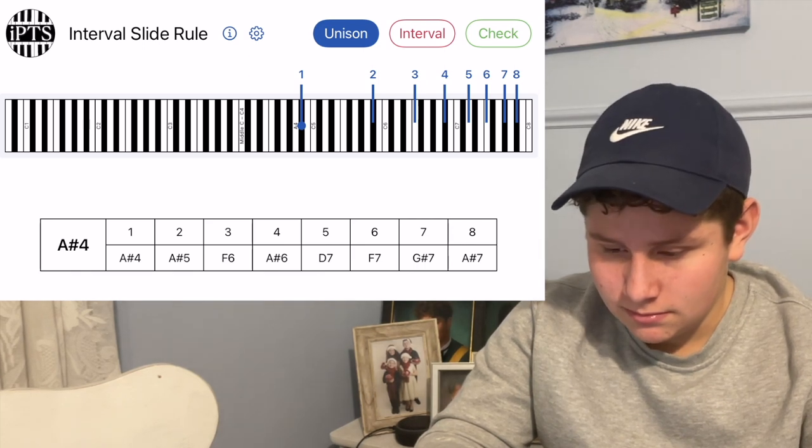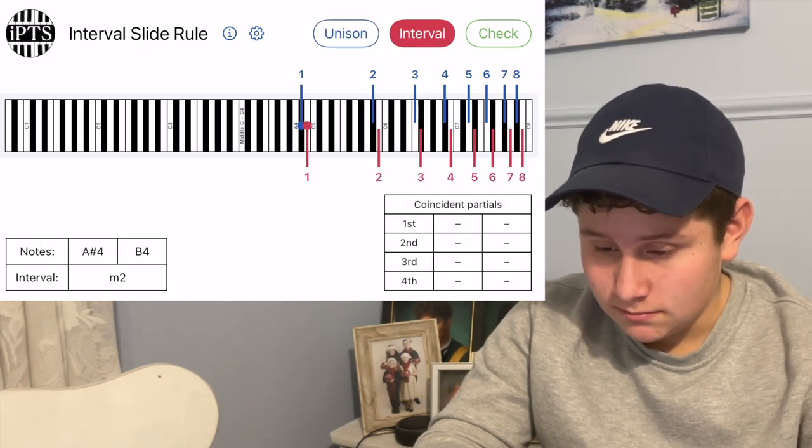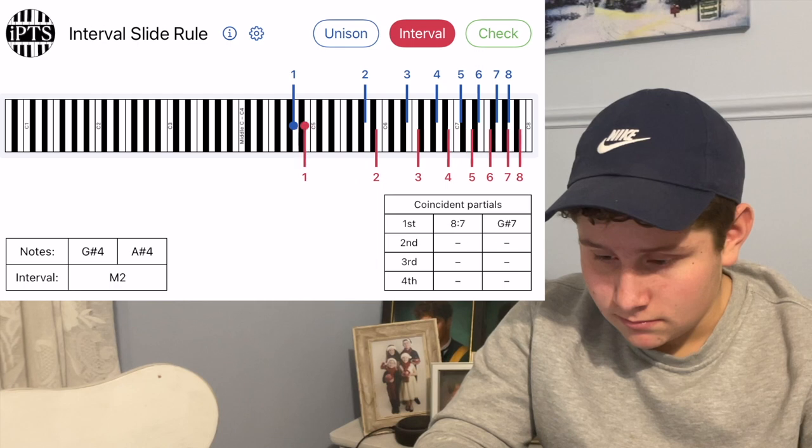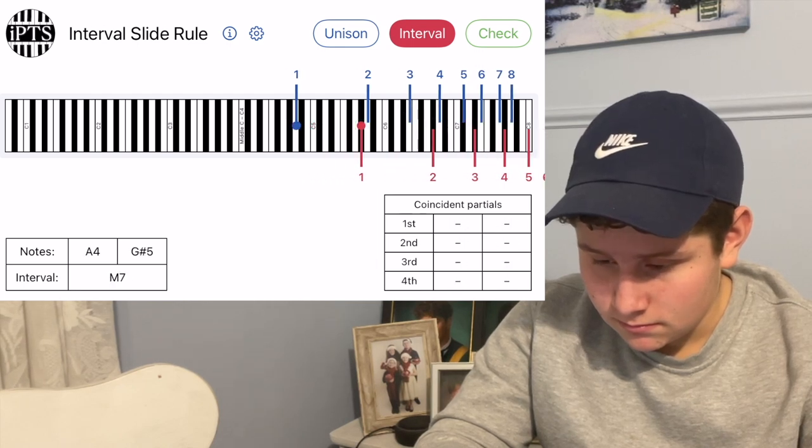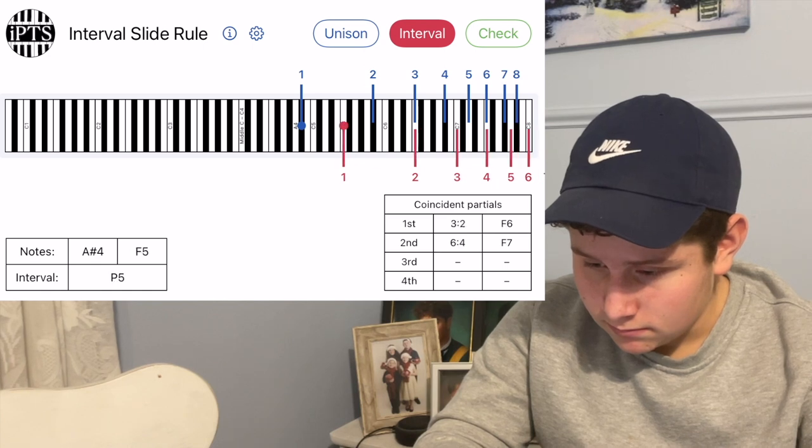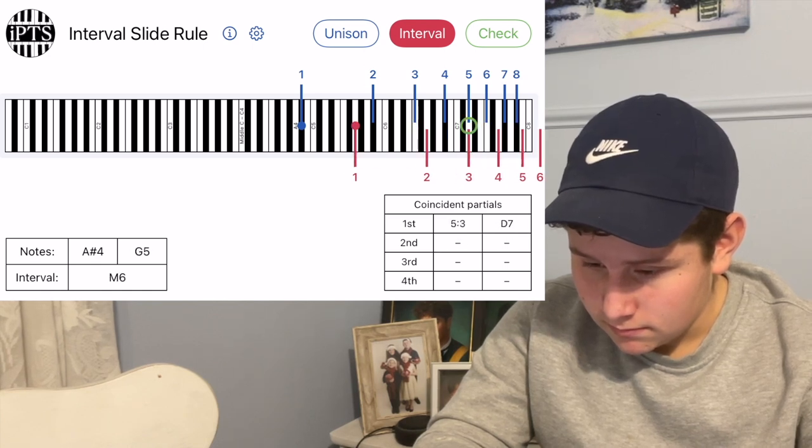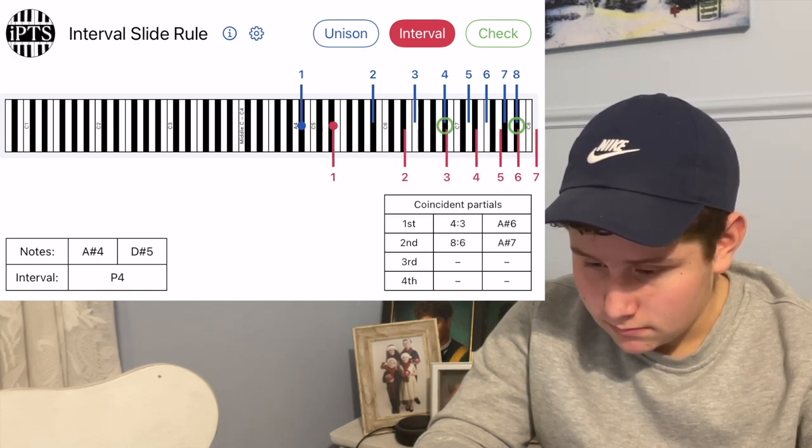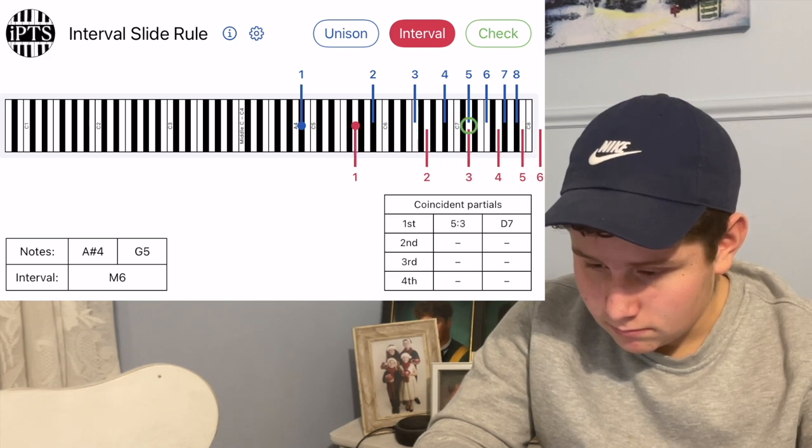All right, now click on the interval. Now you're going to have two partial series, and you can slide the red one around. And when you do that, there's going to be lines where the two partial series line up, and you'll see a green circle. Yep. So just slide it around until you have one green circle, because sometimes there's multiple coincident partials. Slide it around so there's one green circle.